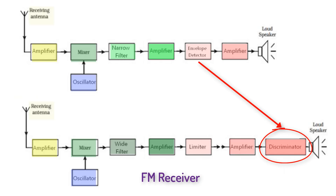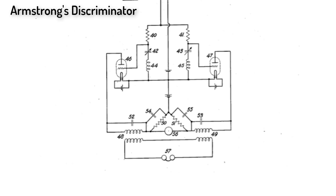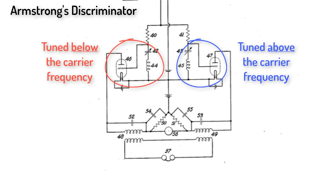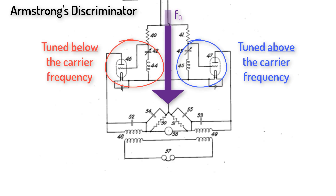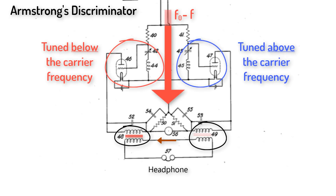Third, instead of an envelope detector, Armstrong used something he called a discriminator that would, as Armstrong put it, quote, 'translate variations in frequency into variations in amplitude.' Armstrong created two tuned circuits with coils and capacitors: one tuned to above the carrier frequency, and one tuned to below the carrier frequency. If a wave was created with no modulation, it would work equally badly in both circuits, and the two coils would get the same voltage induced in them, causing no current to flow between them. However, if the frequency was modulated higher or lower, one circuit would resonate better at a higher amplitude, the other worse at a lower amplitude. This would cause one coil to have higher voltage induced than the other, creating a current between them and correspondingly in the speaker or headphones. The bigger the frequency difference, the bigger the amplitude of the current in the headphones.